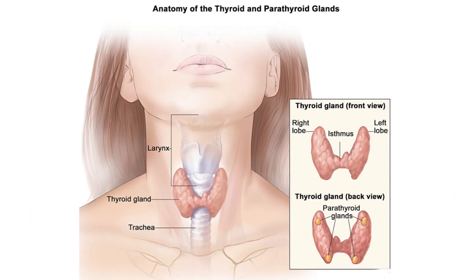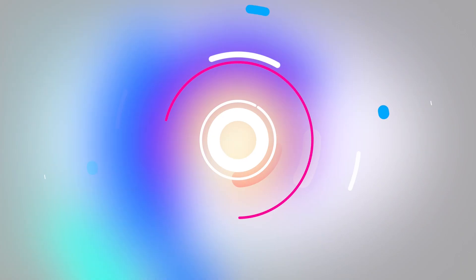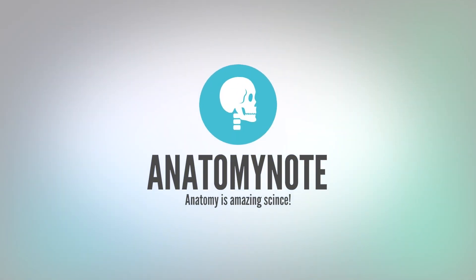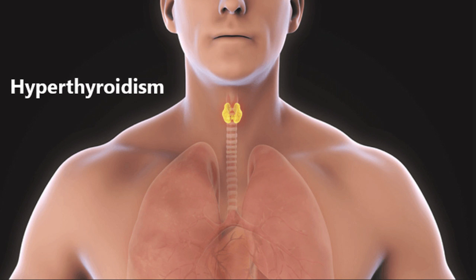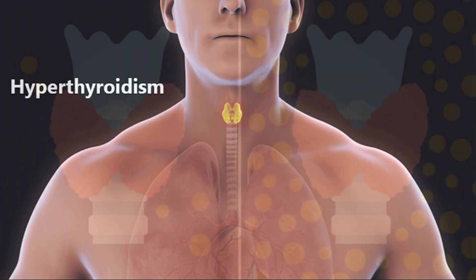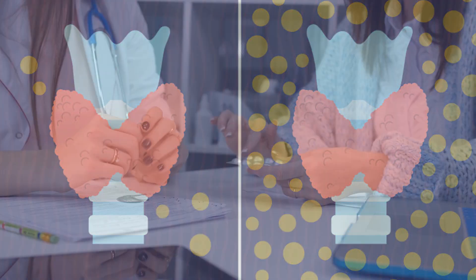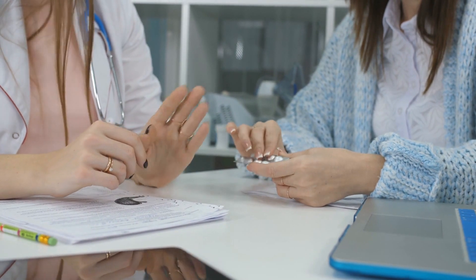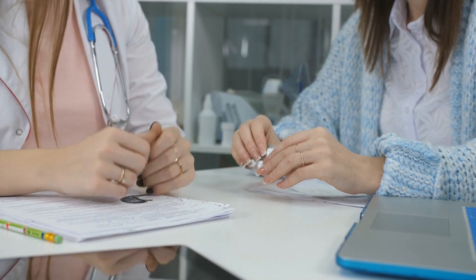In this video, we will introduce you to overactive thyroid, also called hyperthyroidism. Hyperthyroidism is a condition of the thyroid that occurs when the thyroid makes too much T4, T3, or both. Diagnosis of overactive thyroid and treatment of the underlying cause can relieve symptoms and prevent complications.